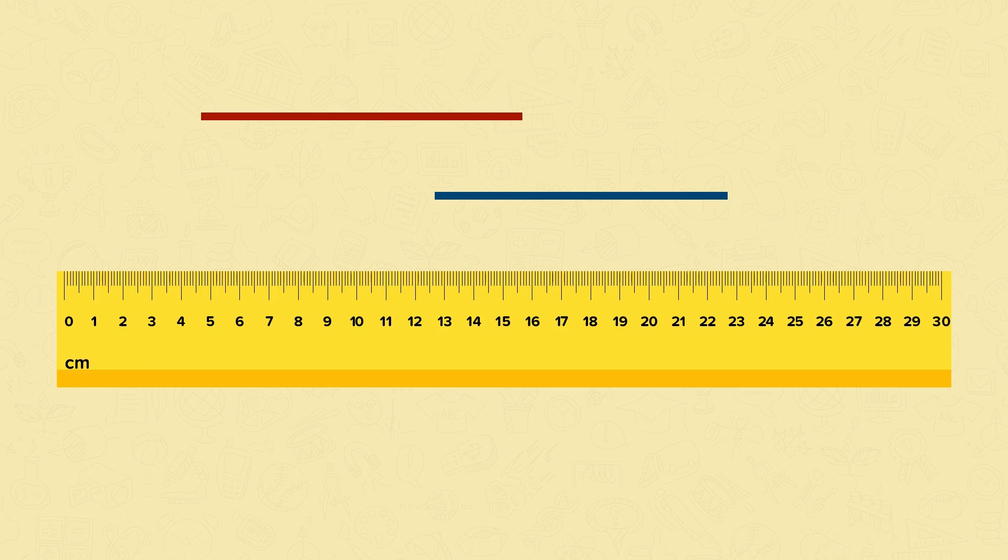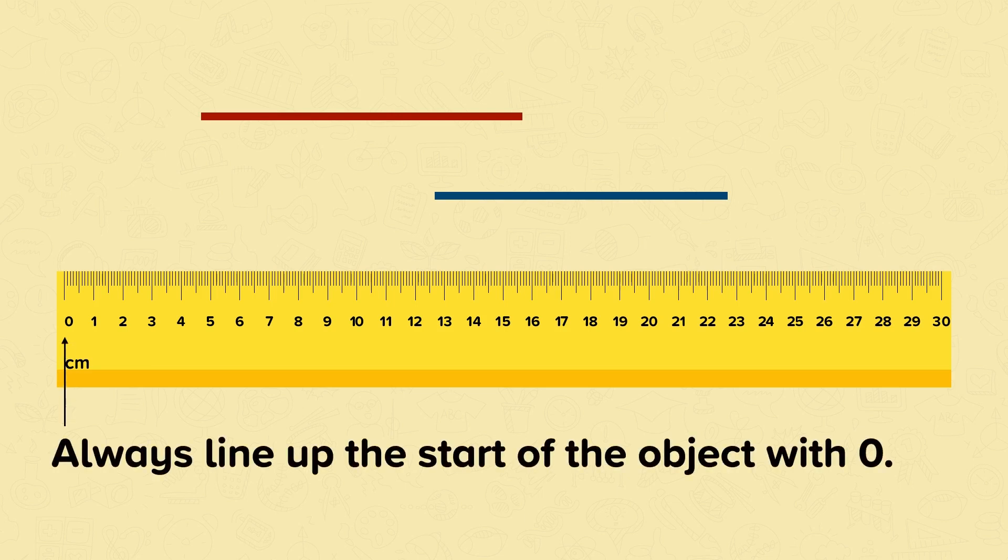When measuring an object, we must always line up the start of the object with zero. This is where we measure from, not the tip of the ruler.